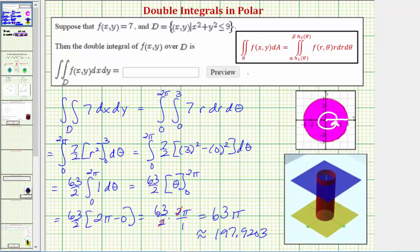Again, let's also check this by determining the volume of the right circular cylinder using a geometric formula. We'll notice how the height of the right circular cylinder would be seven, because our function is f of x comma y equals seven, and because the region of integration is x squared plus y squared less than or equal to nine, we should recognize the radius r is going to be three.